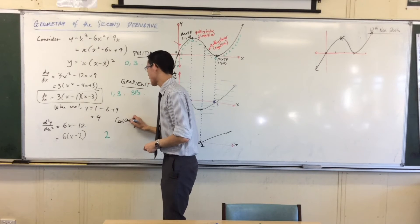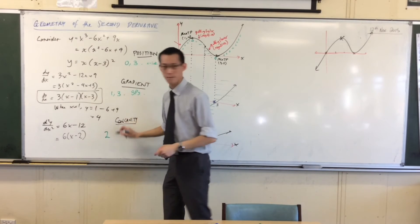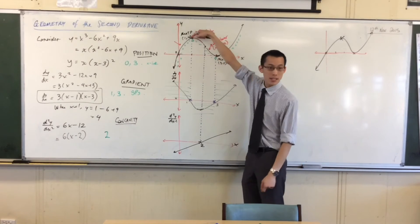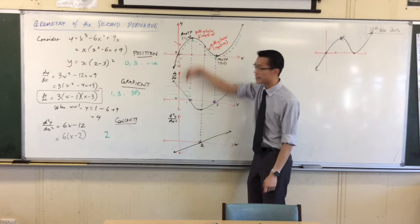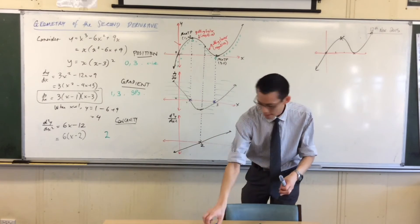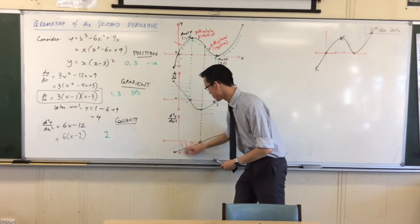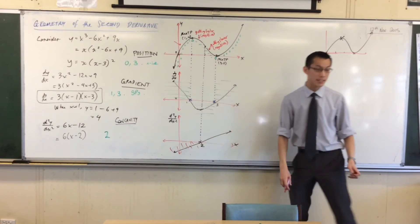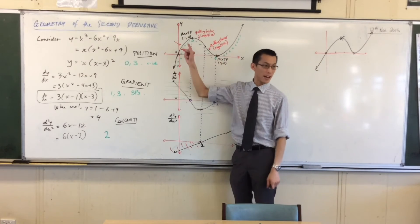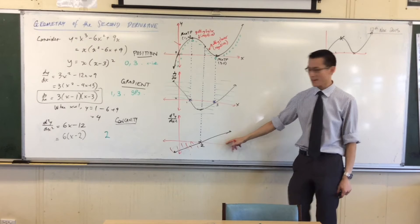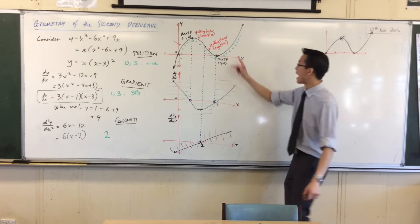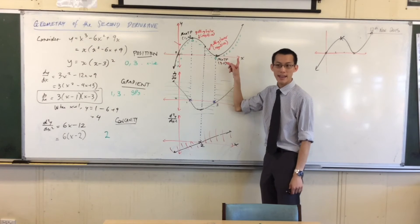We take that word concave — that refers to which way is the cup facing. In this part of the graph it's facing down, which corresponds to the fact that down here the second derivative is negative. Over here to the right, the second derivative is positive, which corresponds to the fact that our original graph is concave up.